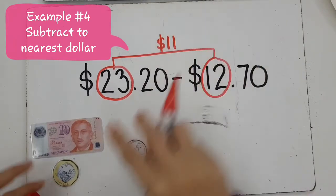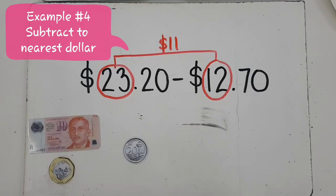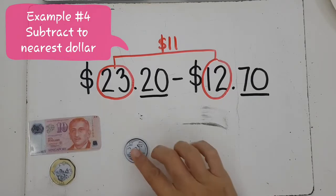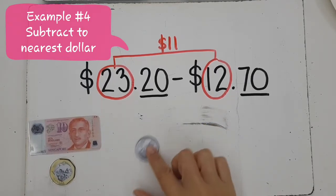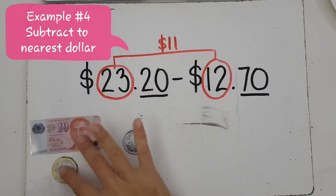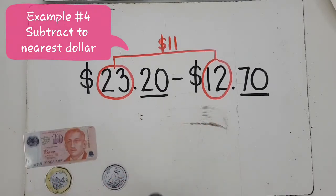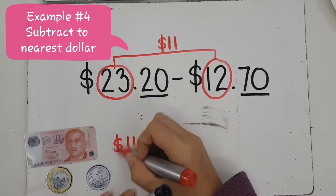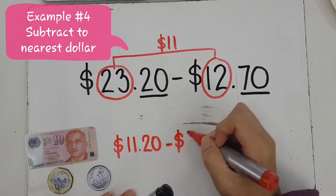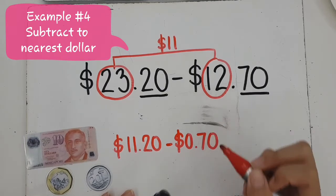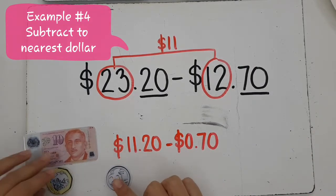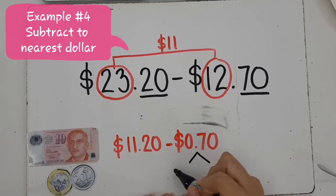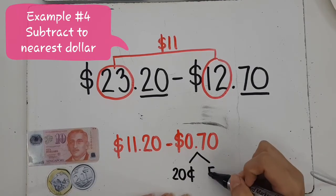Now I need to take away the cents. There are 20 cents and I need to minus 70 cents — how do I take away 70 cents if I only have 20 cents? So here's what I do: I now have $11.20, and I still need to take away the 70 cents. Instead of taking away 70 cents all at once, I'm going to split 70 cents into 20 cents and 50 cents.